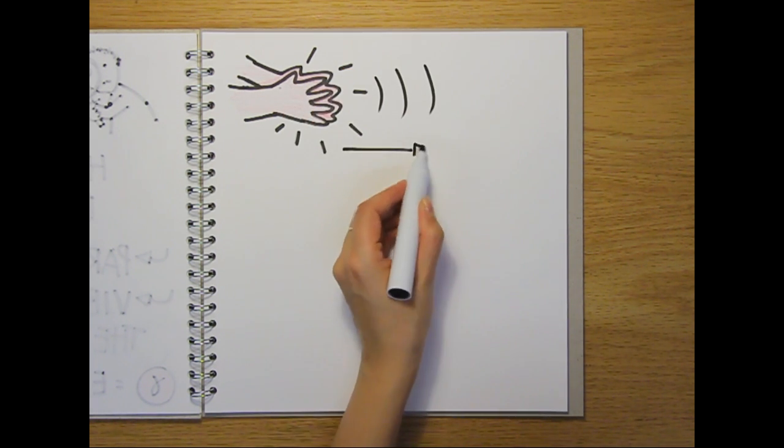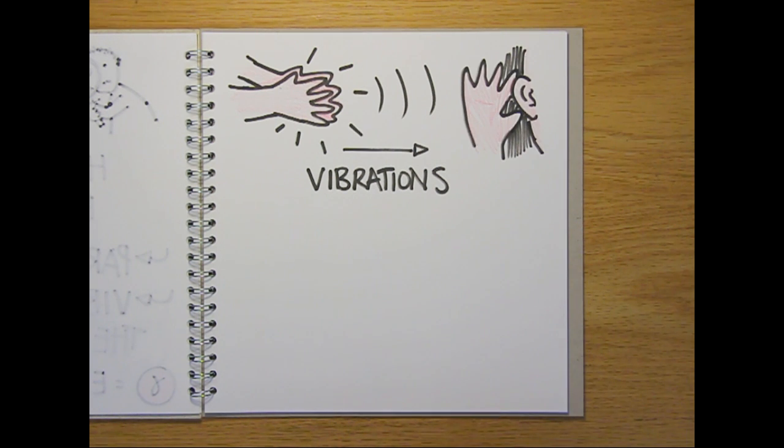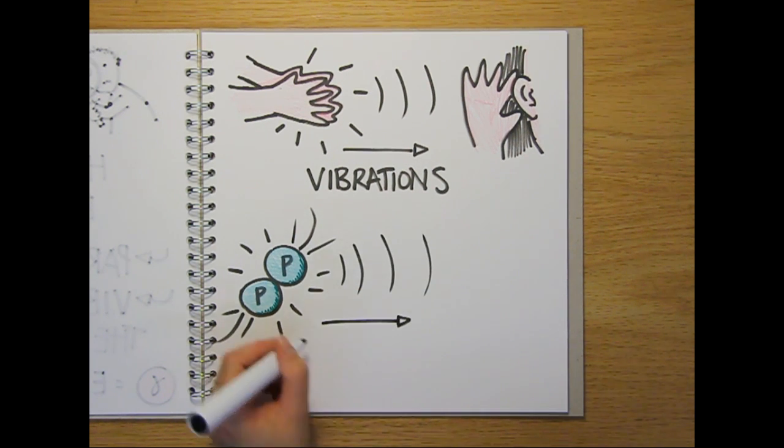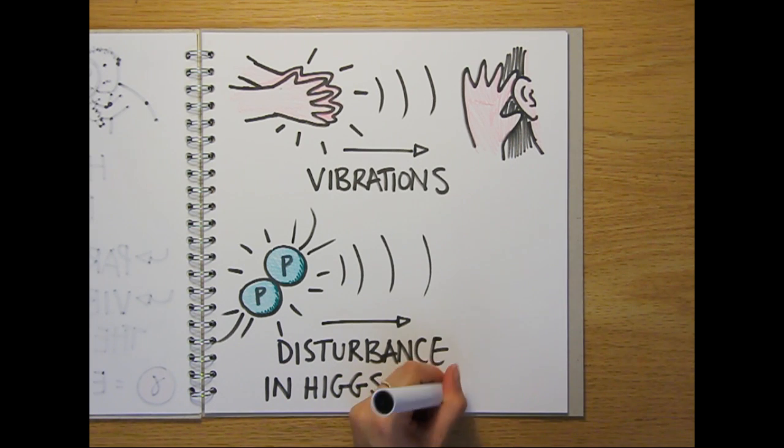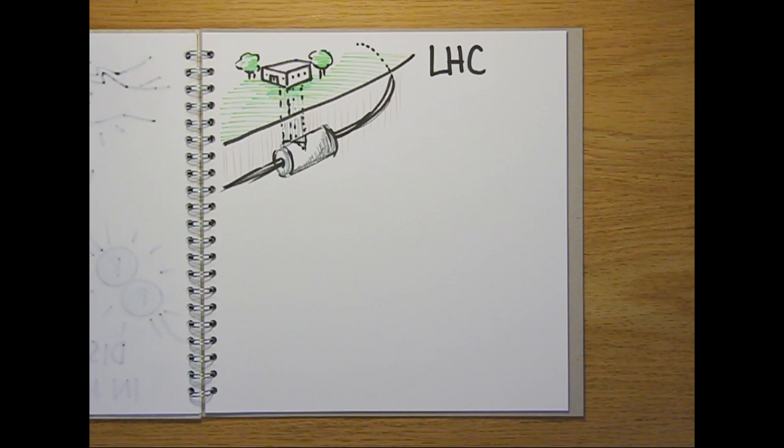It works a bit like this. Imagine clapping your hands. This action disturbs the air around your hands, producing vibrations that we can detect as sound waves. In the same way, the protons smashing together inside the Large Hadron Collider at CERN are like your hands clapping. They disturb the Higgs field enough that we can detect a Higgs boson. And that's one of the main reasons the LHC was built.